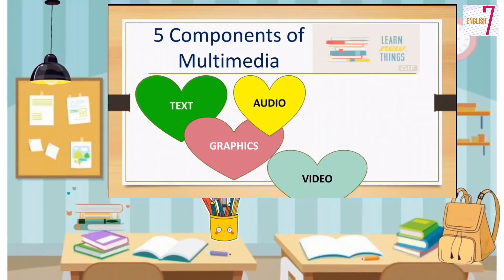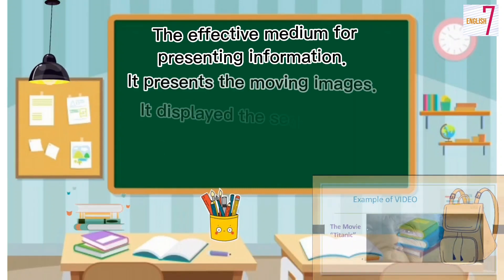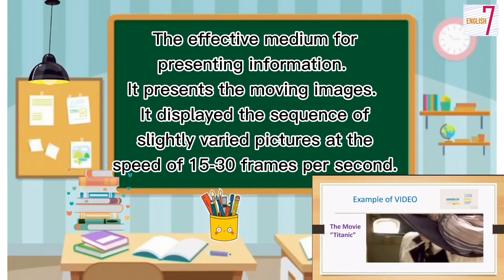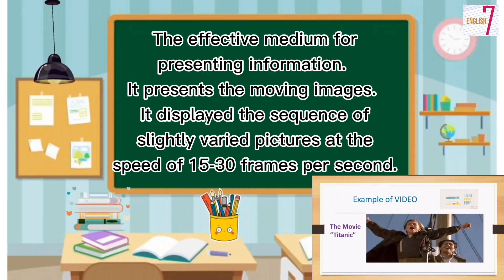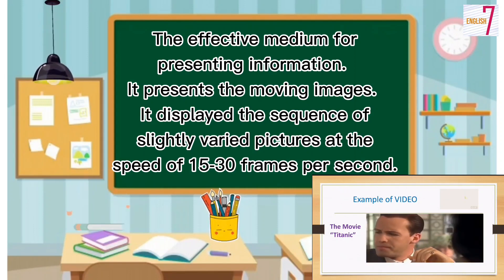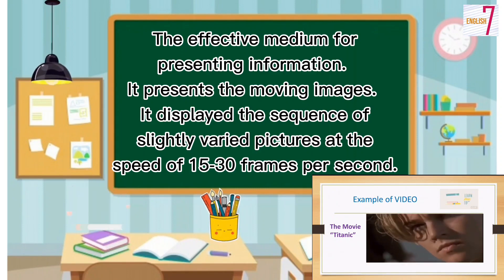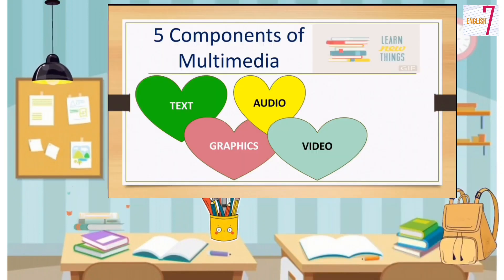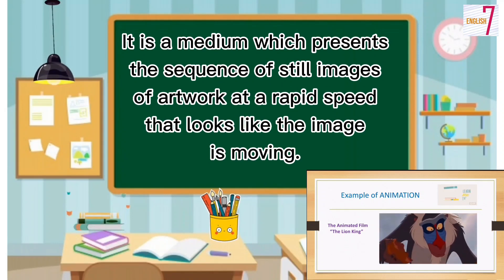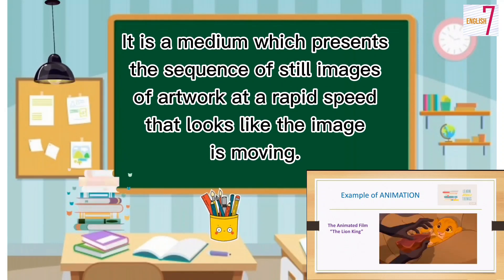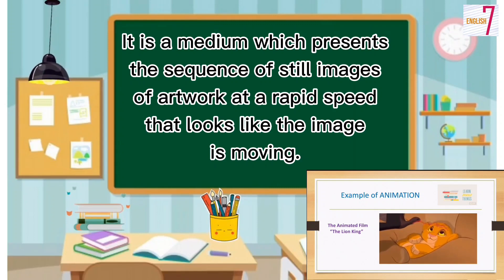Video: The effective medium for presenting information. It presents the moving images. It displays the sequence of slightly varied pictures at a speed of 15 to 30 frames per second. Animation: It is a medium which presents the sequence of still images of artwork at a rapid speed that looks like the image is moving.